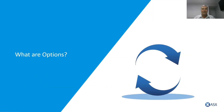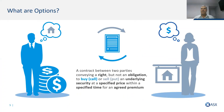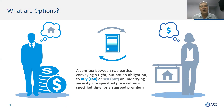When I was at university studying options, I found the formal definition very complicated: 'a contract between two parties that conveys a right but not an obligation to buy (a call) or sell (a put) an underlying security at a specified price within a specified timeframe for an agreed premium.' The best way I found to understand options is through analogies, so I'm going to share one that I hope will help you understand what makes up an options contract.